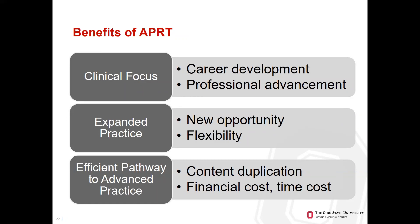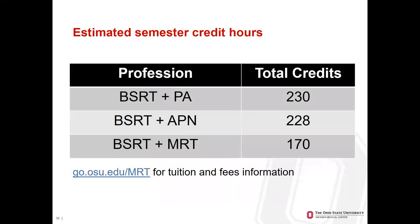The next slide demonstrates the credit hours required. If you pursue the BSRT plus the PA route, total credits required are 230. If you go BSRT to advanced practice nurse, the average credits required are 228. This MRT program is 47 graduate credit hours — about half of what's required if you pursue other routes. We hope to provide a very efficient way for you to become an advanced practice provider.